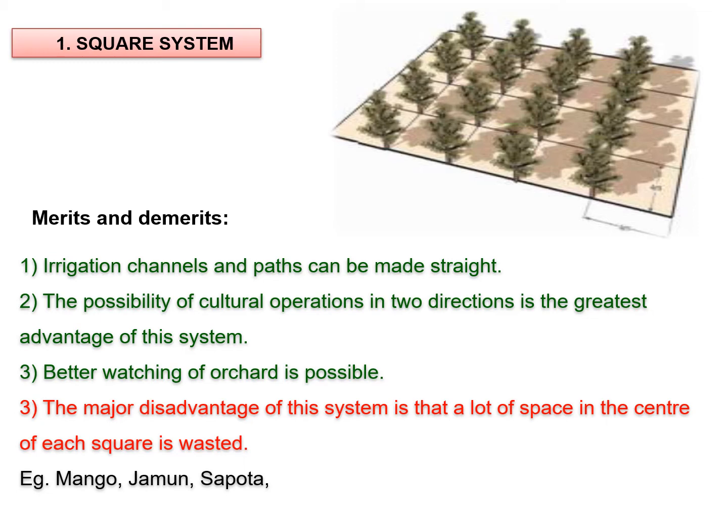This system of planting is usually adopted all over India. Through this system, we may grow mango, jamun, and sapota.